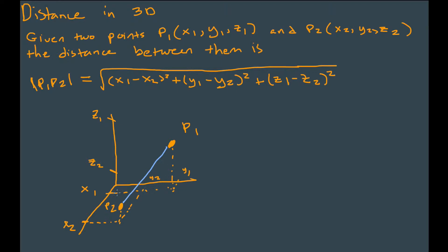P1 has coordinates X1, Y1, Z1, and point P2 has coordinates X2, Y2, and Z2. The distance between those two points — the straight lines on the side usually represent magnitude or distance — is given by the square root of (X1 minus X2) squared plus (Y1 minus Y2) squared plus (Z1 minus Z2) squared.